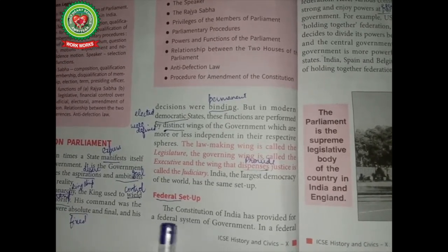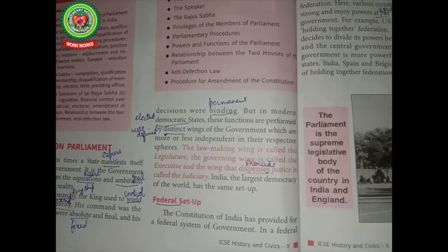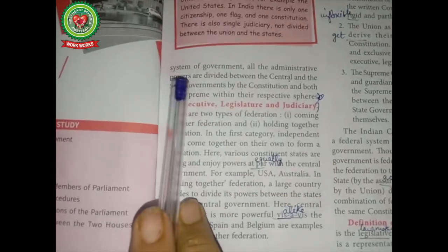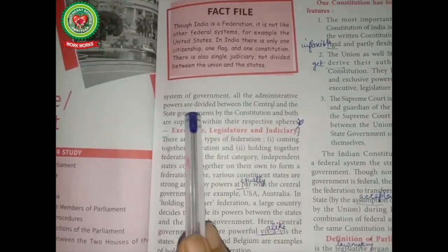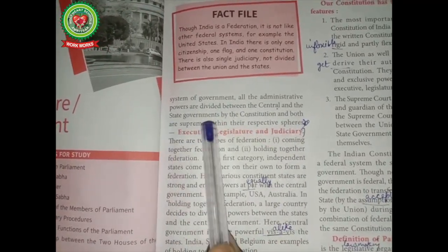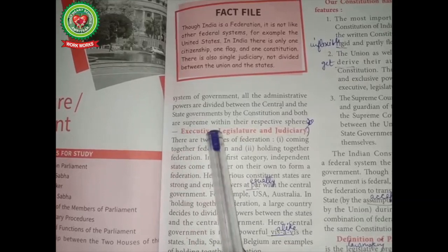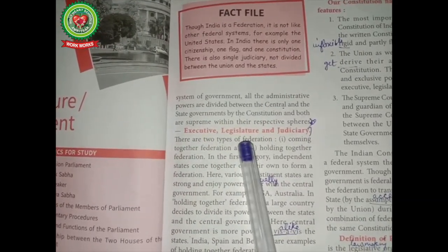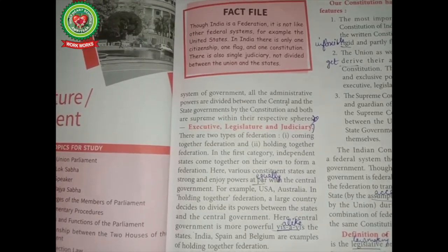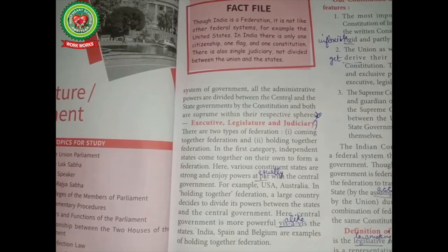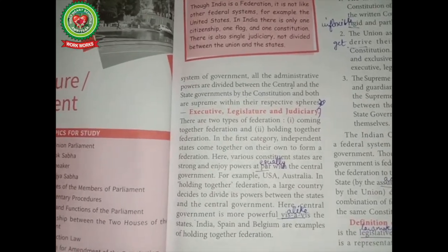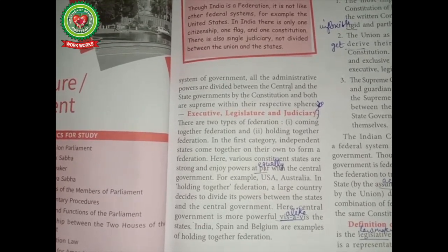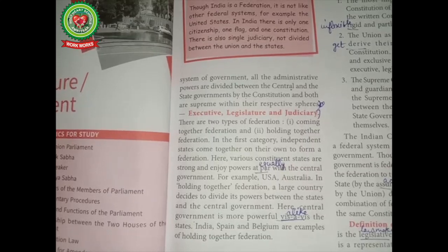Federal setup: The constitution of India has provided for a federal system of government. In a federal system, all the administrative powers are divided between the central and the state governments by the constitution, and both are supreme within their respective spheres — executive, legislature, and judiciary.